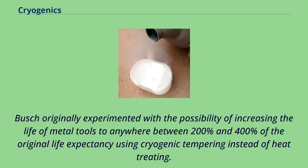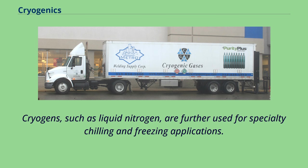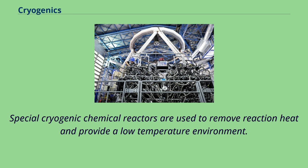Bush originally experimented with the possibility of increasing the life of metal tools to anywhere between 200 and 400 percent of the original life expectancy using cryogenic tempering instead of heat treating. This evolved in the late 1990s into the treatment of other parts. Cryogens such as liquid nitrogen are further used for specialty chilling and freezing applications. Some chemical reactions, like those used to produce the active ingredients for popular statin drugs, must occur at low temperatures of approximately minus 100 degrees Celsius.